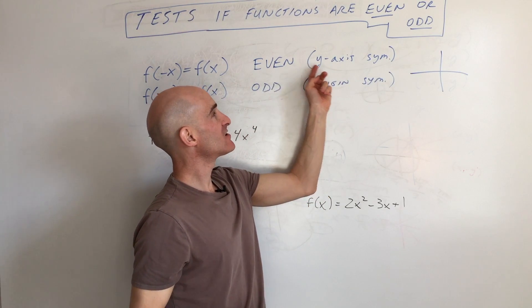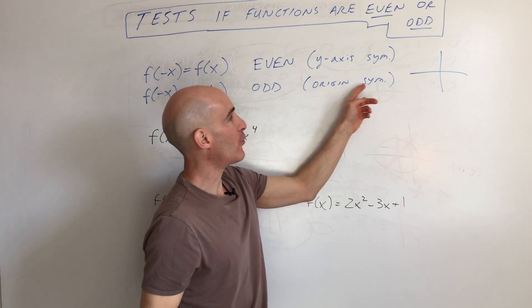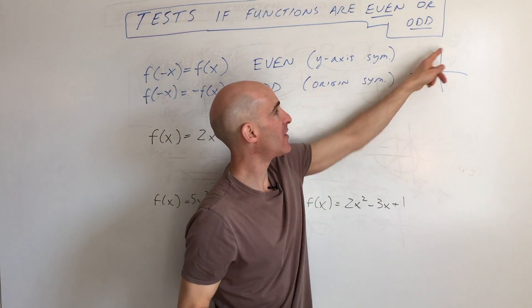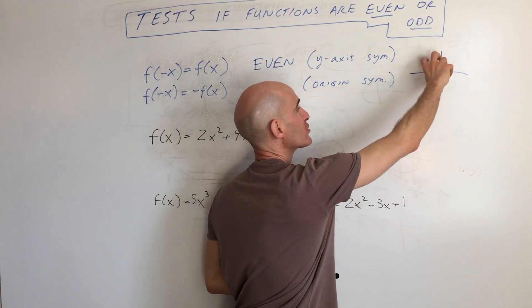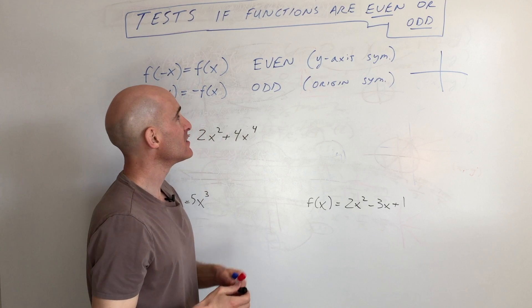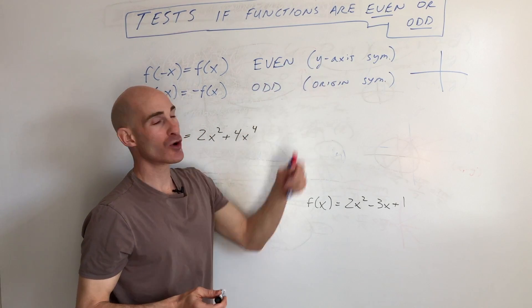So even functions have y-axis symmetry, and odd functions have origin symmetry, meaning if you rotate them 180 degrees, you turn them a half turn about the origin, like you're pivoting at the origin, they match with themselves. So even and odd is just another way of saying y-axis and origin symmetry.